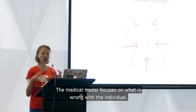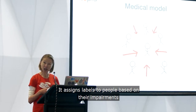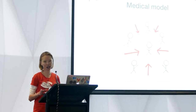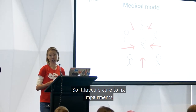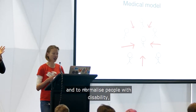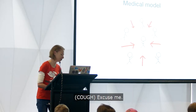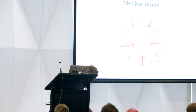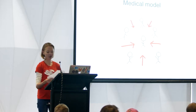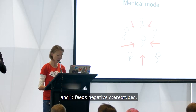So the medical model focuses on what is wrong with the individual. It assigns labels to people based on their impairments and just totally removes their personhood — it's all about the disability. And as mentioned, everything's about fixing that. So it favours cure to fix impairments and to normalise people with disability, even if it doesn't actually add anything to their quality of life. And it also tends to lead to low expectations of people with disability and it feeds negative stereotypes.